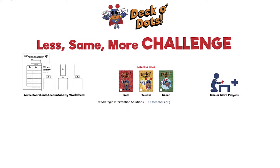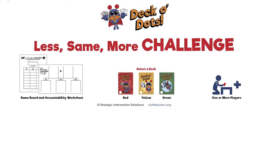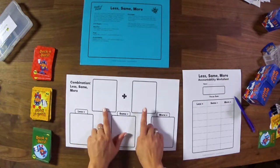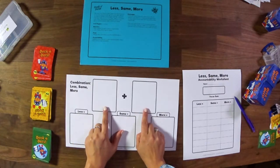This game is the less, same, more challenge game. This is a game for students that you might want to help them with looking at quantities that go over 10. So we call it a combination, less, same, more. On this game board, there's a spot for them to put their focus combination.